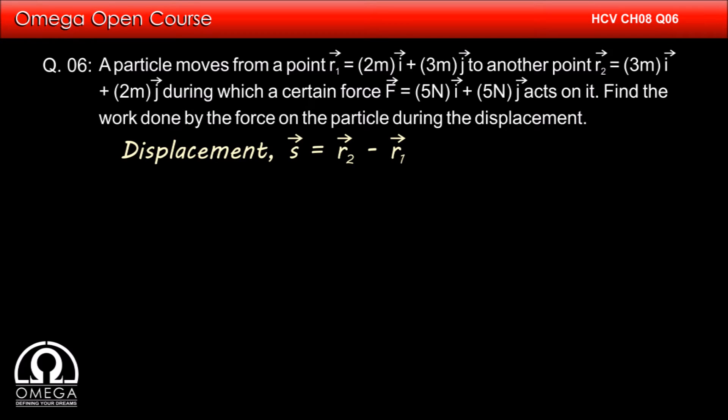Displacement vector s is given by the final position vector minus the initial position vector, that is vector r₂ minus vector r₁: (3i + 2j) - (2i + 3j), which on simplification gives (i - j).